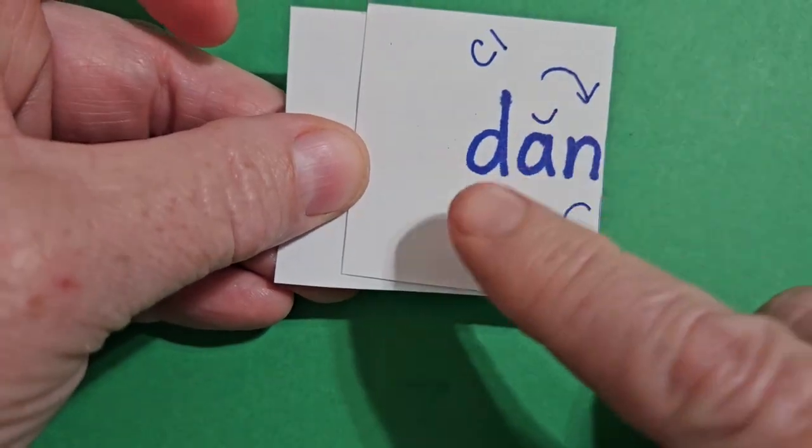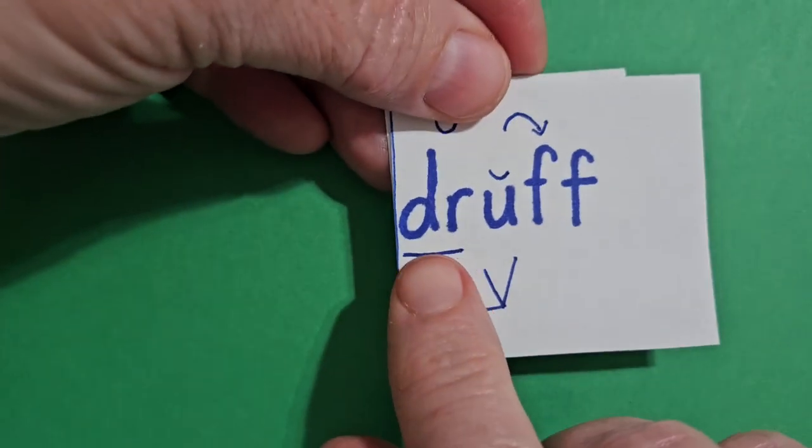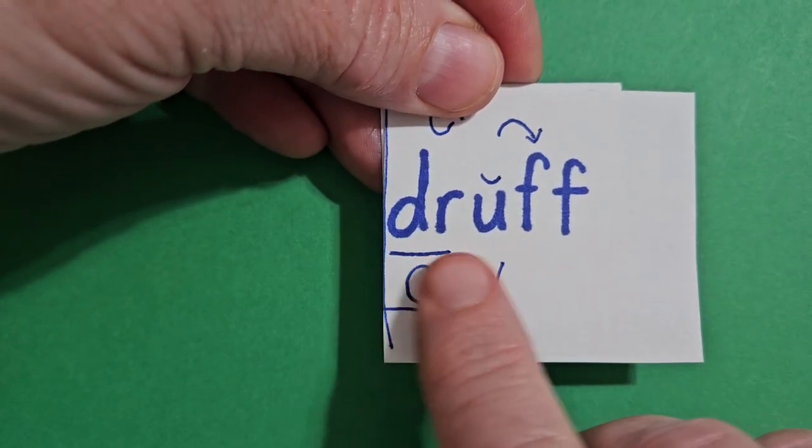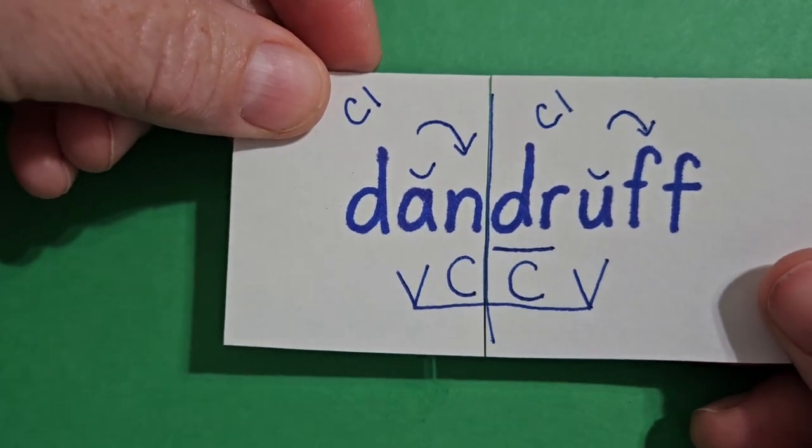And then I can read D, AN, DAN, DRUF, DRUF. Read it together. DAN, DRUF, DANDRUFF.